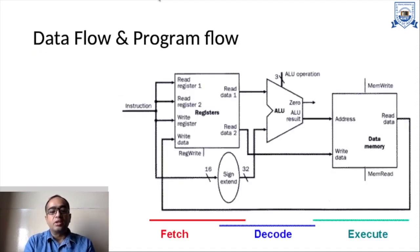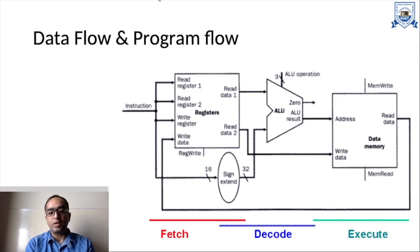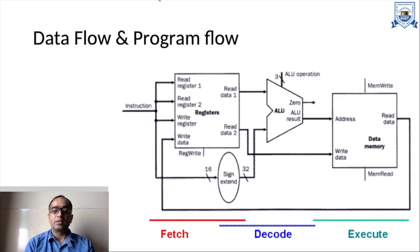To start with, we must first understand that the instructions and data which are stored in RAM have to be fetched. This entire cycle takes the instructions and data from the memory, sends them to the registers, then the instructions are sent to the ALU, and the ALU operates on the data fetched from the memory and sends back the result to the memory.